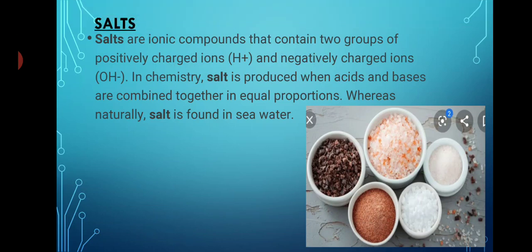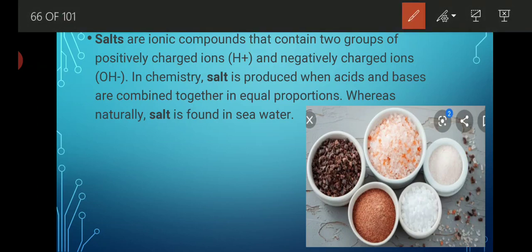What is salt? Basically, salts are ionic compounds that contain two groups — positively charged ions (H ion) and negatively charged ions (OH ion). In chemistry, salt is produced when acid and base are combined together in equal proportion. Naturally, salt is found in sea water. As discussed earlier, with the help of a neutralization reaction, whenever any acid reacts with a base, the formed product is a type of salt. Naturally, we obtain salt from sea water through evaporation followed by distillation.